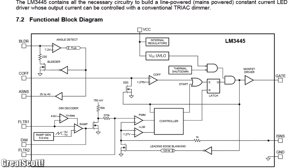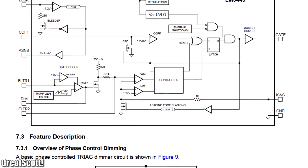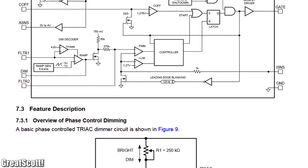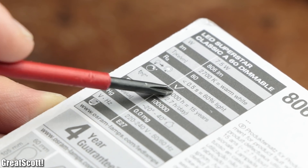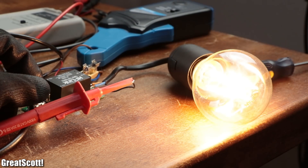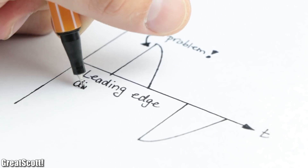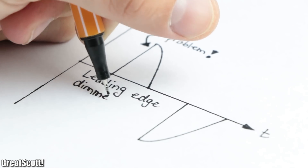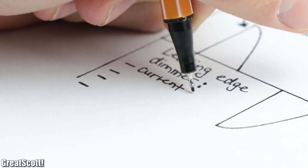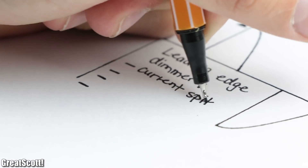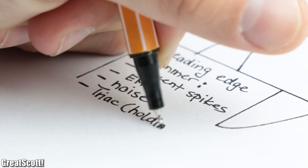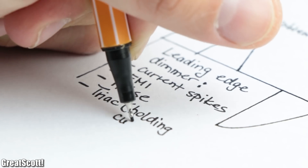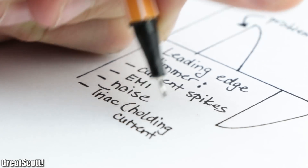Like the LM3445 triac-dimmable LED driver, for example, whose datasheet can tell you lots of secrets about such dimmable LED driver circuits. So when you buy a properly labeled dimmable LED light bulb, they should function well with the leading edge dimmers we used so far, which like the name implies offers a leading edge voltage. But like we already determined, such a leading edge creates current spikes, electromagnetic interference, and noise, and since such designs are also often based around a triac, we also have the minimum holding current issue.